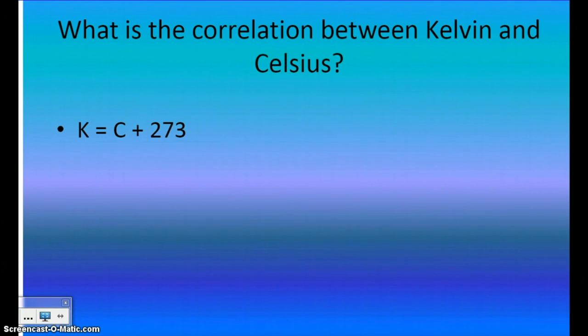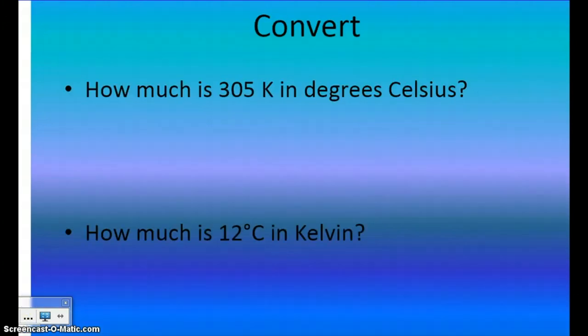Now, to get from Kelvin to Celsius, we'll use the equation K equals C plus 273. K is any temperature you have in Kelvin. C is any temperature you have in Celsius. So if you were given something in Celsius, you would put it where the C is, add 273, and that would give you Kelvin. If you had Kelvin, you would put it where the K is, subtract 273, and that would get you to Celsius. Let's see some examples.